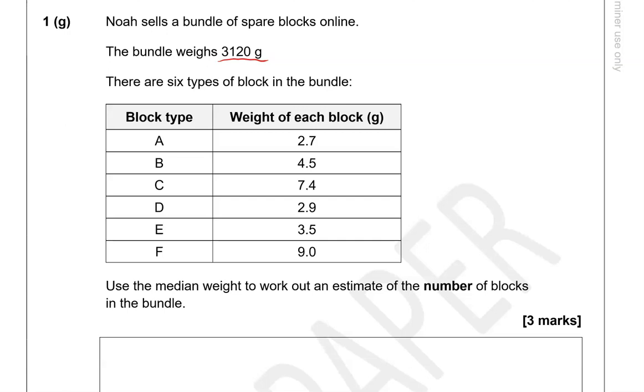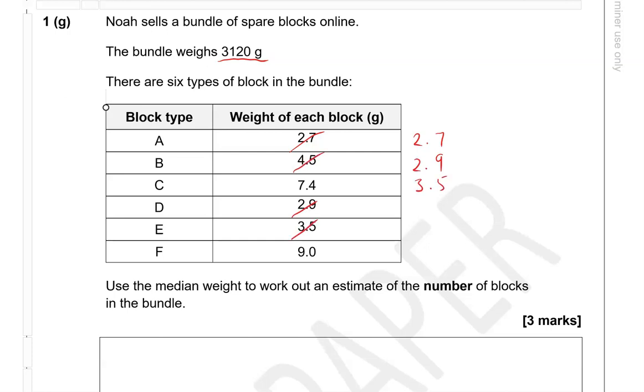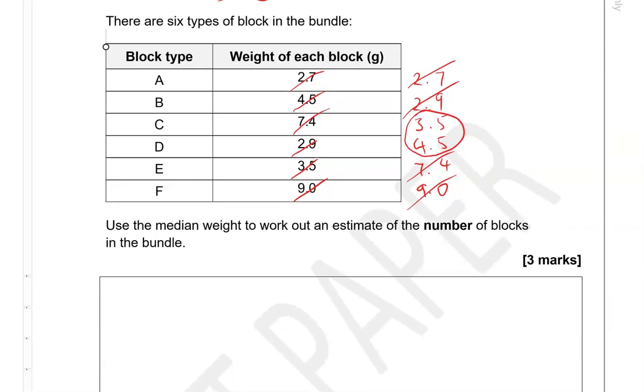So, 2.7, that's the lowest of them all. Then we have 2.9, then we have 3.5, then we have 4.5, then we have 7.4, and finally, 9.0. So, crossing these out, we've got these two numbers in the middle. So, 3.5 and 4.5. If we add them together, then we can divide them by 2. So, 5 and 5, that is 10. 1 carried over. 3 and 4, 7. And the one is 8. So, half of 8, that is 4. So, 4 grams is the median weight of each block.